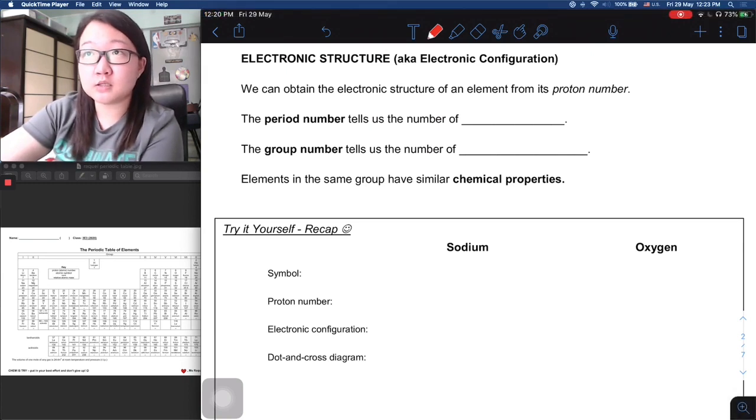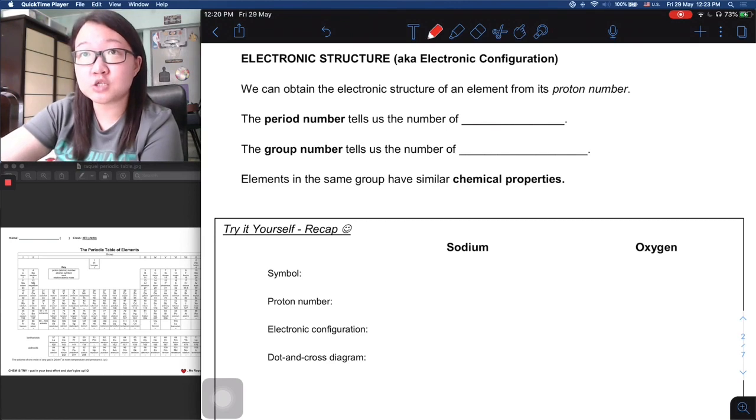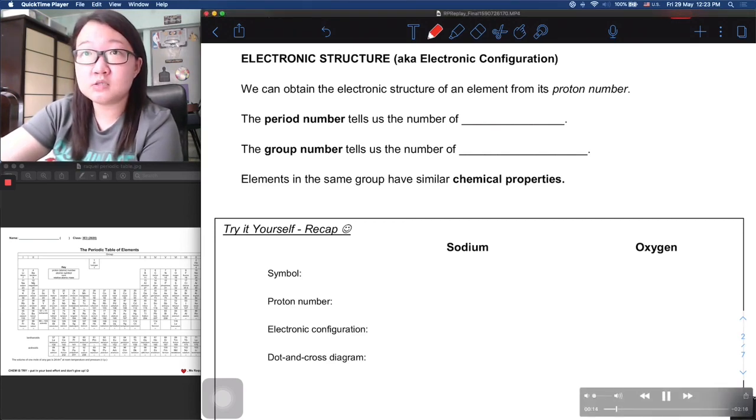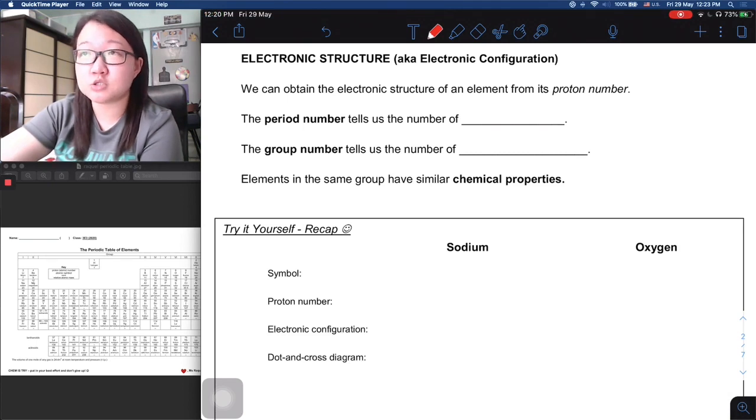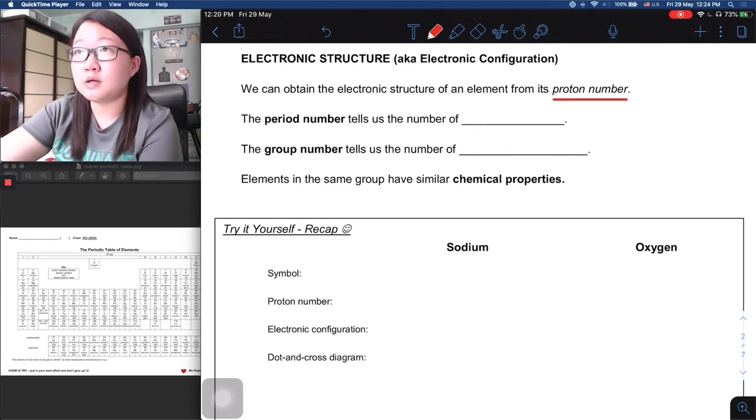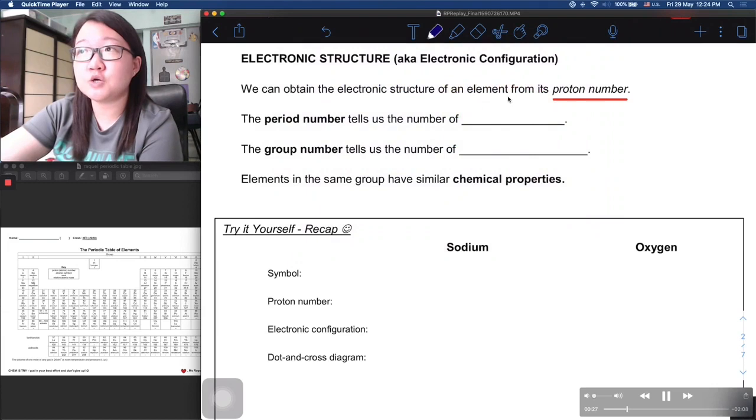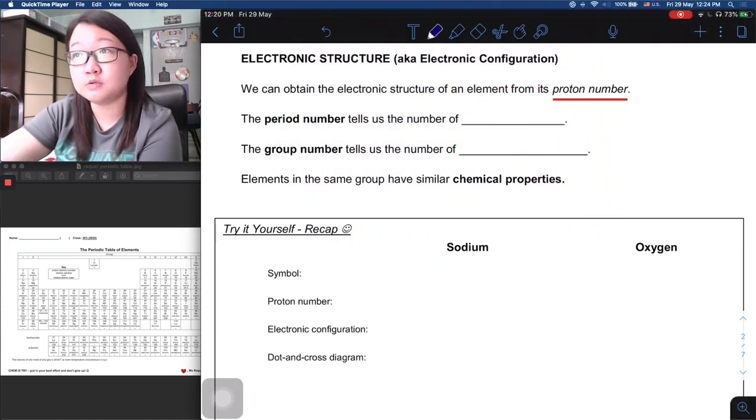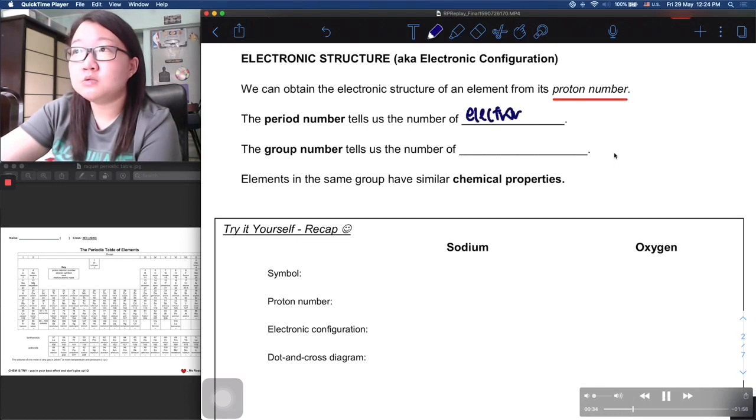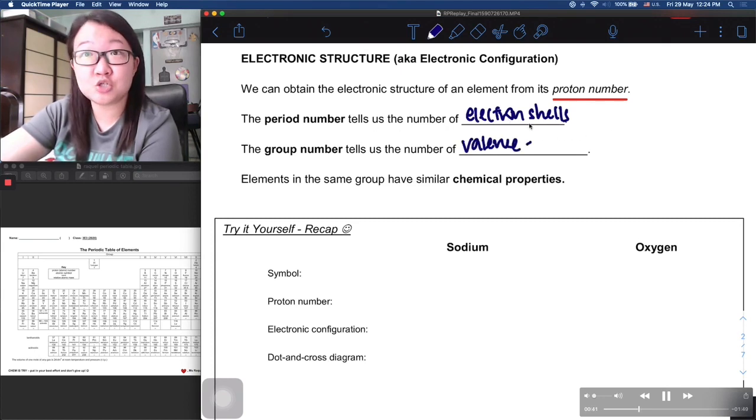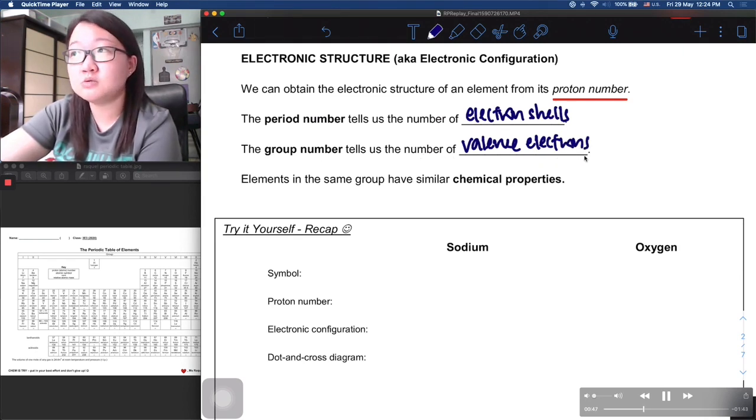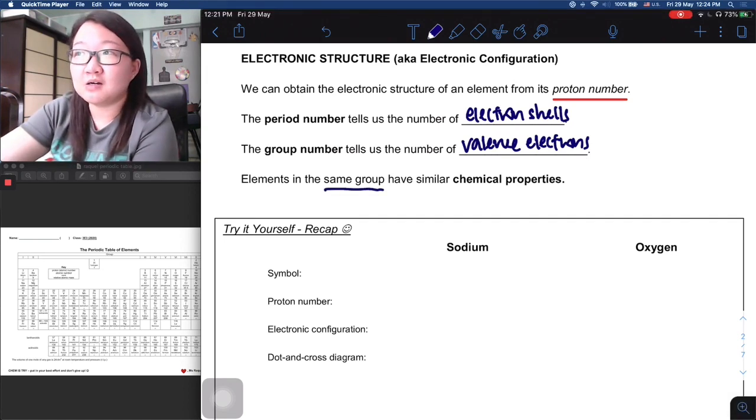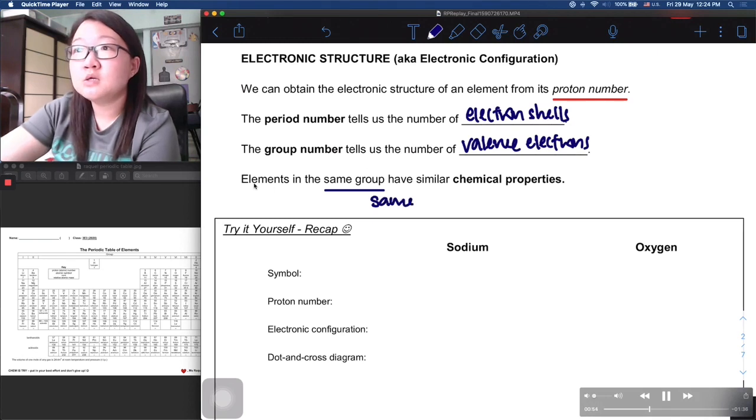Let's move on to the next part on periodic trends. This second part is on electronic structure, which we have seen in extensive detail in the atomic structure chapter. We also use the term electronic configuration to refer to this. You can obtain the electronic structure of an element from its proton number, meaning directly from the periodic table. Remember we taught you this trick that you can use period number to tell you the number of electron shells that an element has, and then the group number will tell you the number of valence electrons. Actually, this is not a trick, it is actually under this topic on periodic table.